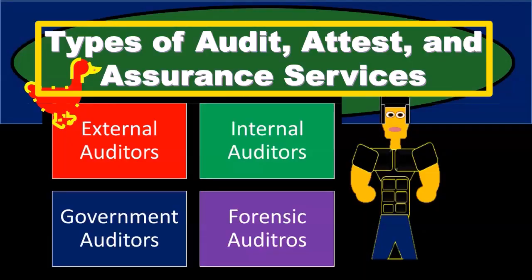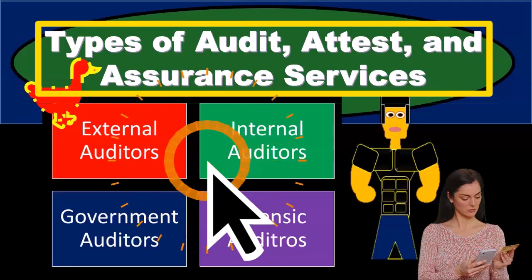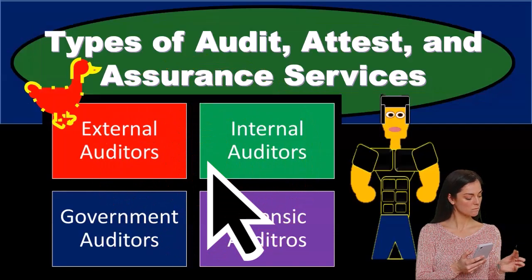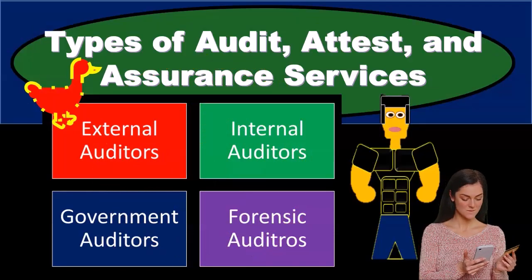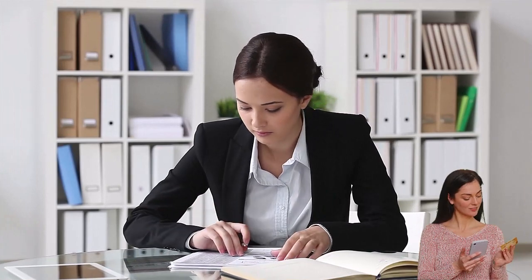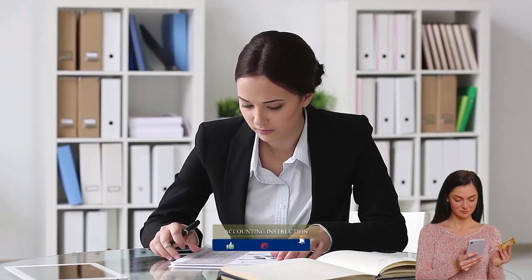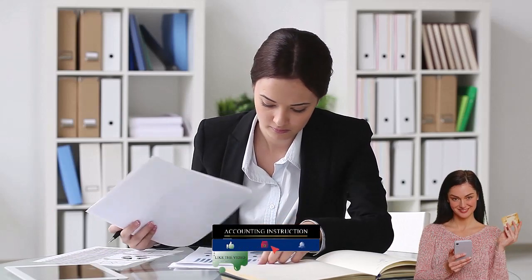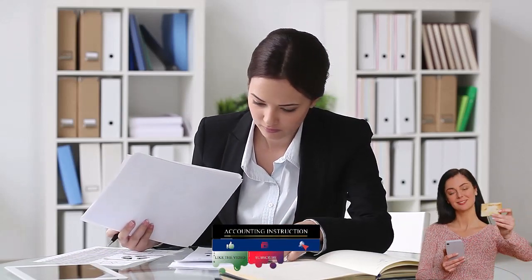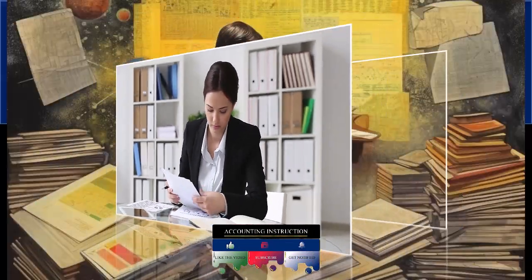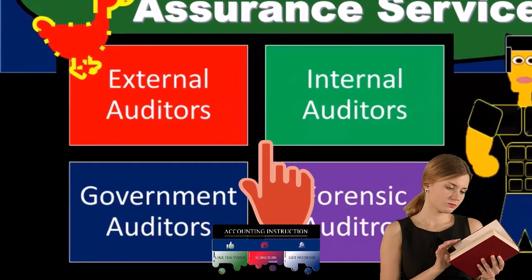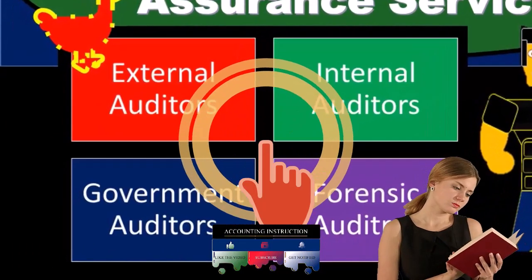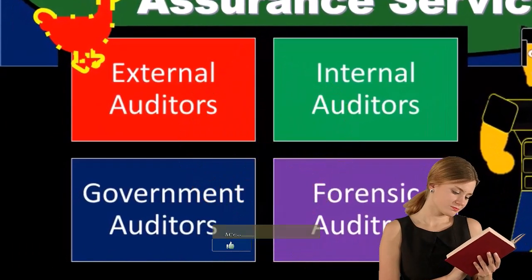Since we are essentially thinking about what CPA firms do and what services CPA firms provide, when we think about public accounting, what are the types of things that public accounting firms do? The first thing that comes to mind for most people — or at least most accounting students — are audits. When you're thinking about accounting and ending up with an accounting degree, you're typically thinking that if you want to go into public accounting, you're going to be dealing with audit.